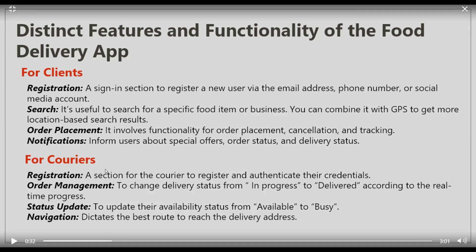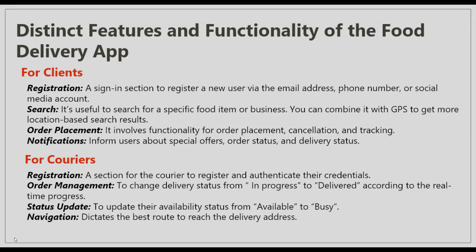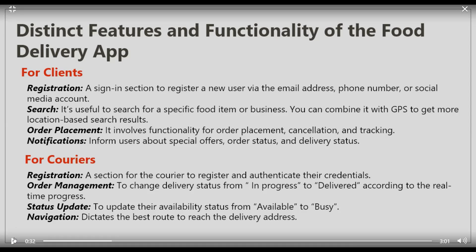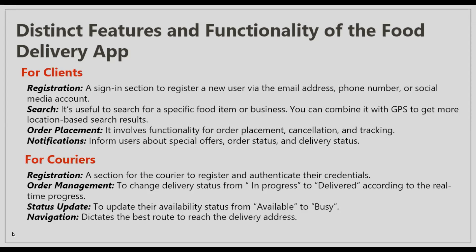For clients, we have registration — a sign-in section to register a new user via email address, phone number, or social media accounts such as Google or Facebook. It is useful to search for a specific food item, and can be combined with GPS for location-based search results. Order placement involves functionality for order placement, cancellation, and tracking, plus notifications that inform users about special offers, order status, and delivery status.